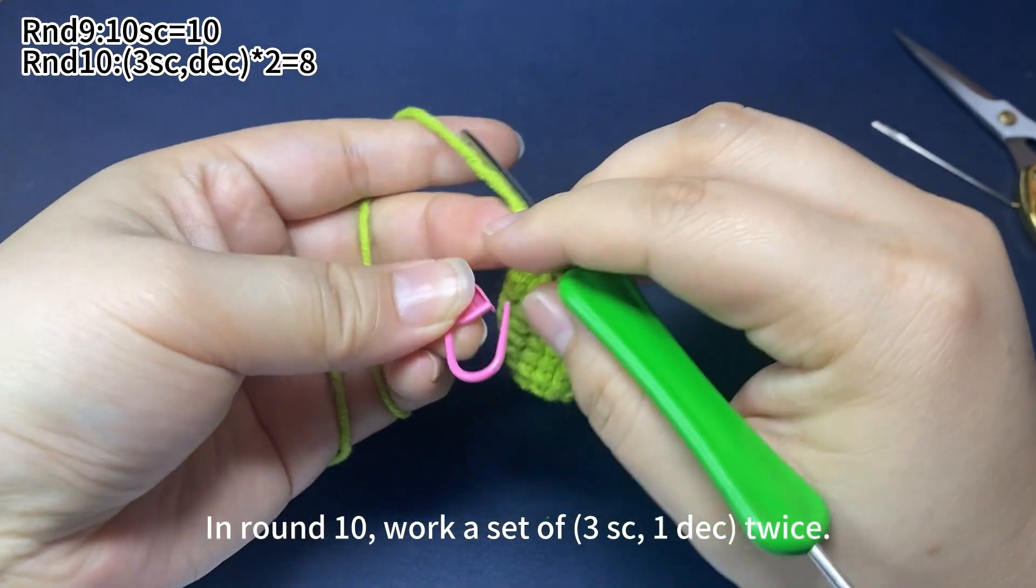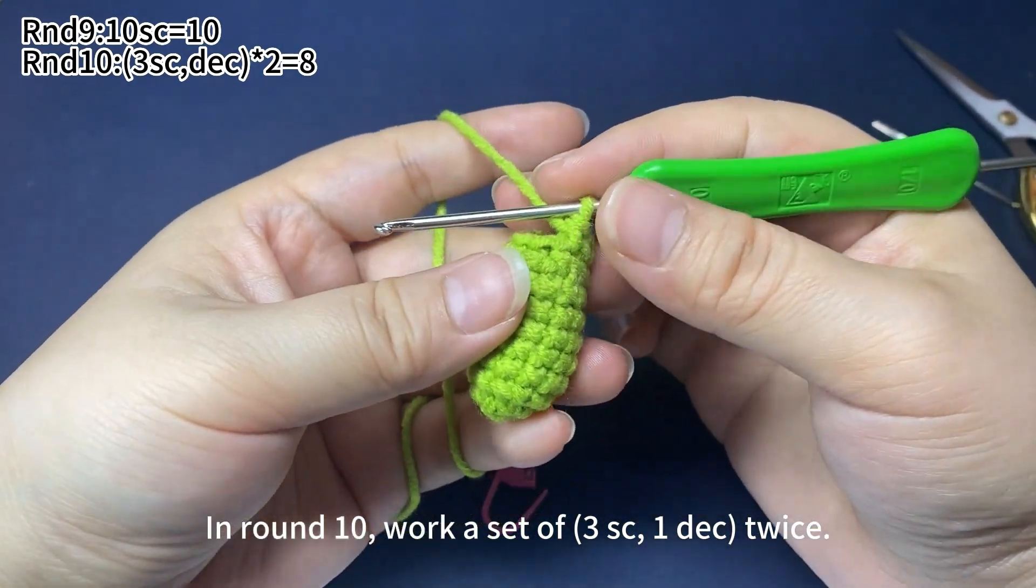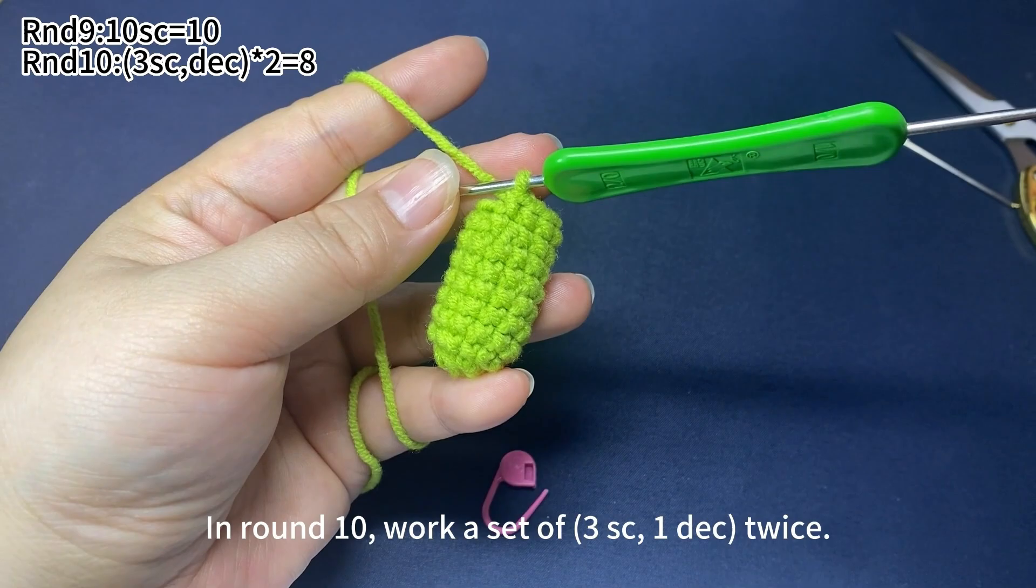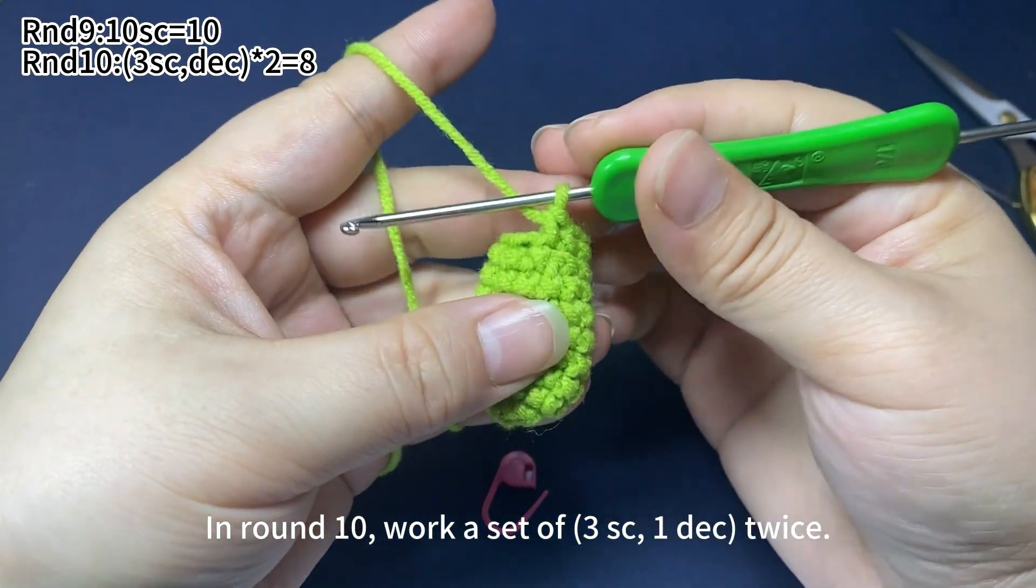Remove the marker and start round 10. In round 10, work a set of 3 single crochets, 1 decrease, twice.